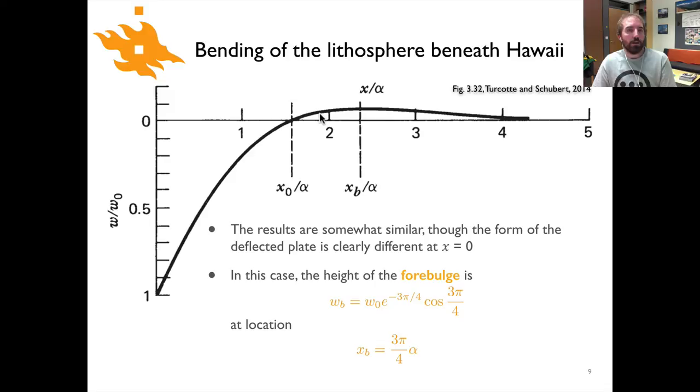So the form is kind of similar but along the x-axis the four bulge emerges or the elevations exceed or have a negative deflection I guess at about x equals 1.6 or x over alpha equals about 1.6 whereas before you had to get over 2 before that occurred. Otherwise the form and you know the size of the four bulge is comparable maybe a little bit wider in this case.